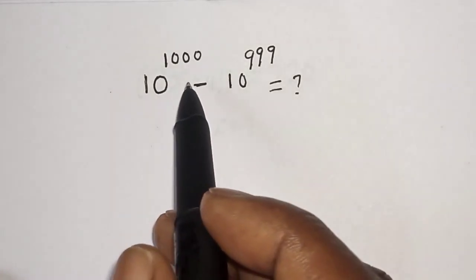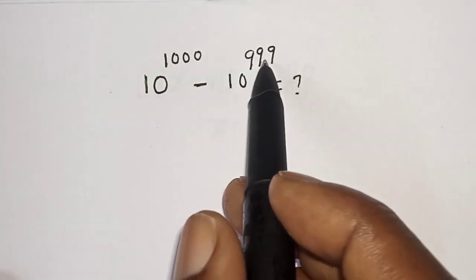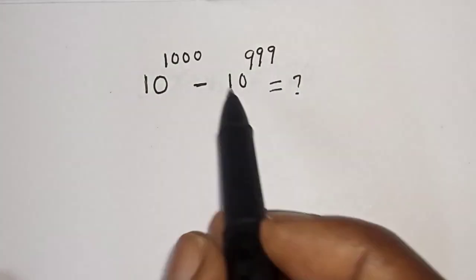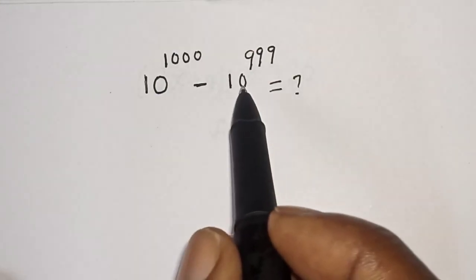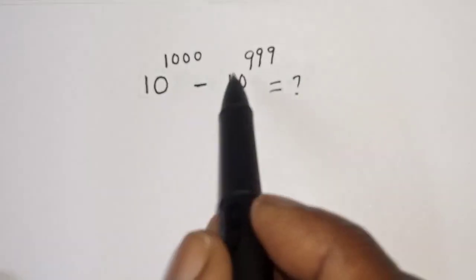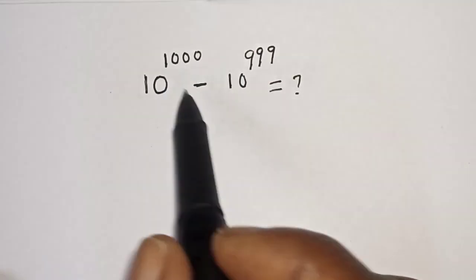10 raised to power 1000 minus 10 raised to power 999 is equal to what? Hi everyone, welcome to my class. In this class, we want to simplify this nice problem.